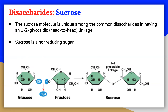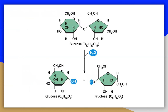Sucrose exists in only one form, both in the solid state and in solutions. In addition, sucrose does not undergo reactions that are typical of aldehydes and ketones. Therefore, sucrose is a non-reducing sugar. The hydrolysis of sucrose through the action of the enzyme sucrase gives an equal mixture of glucose and fructose. Because fructose is sweeter than sucrose, the hydrolysis adds to the sweetening effect. Bees carry out this reaction when they make honey.